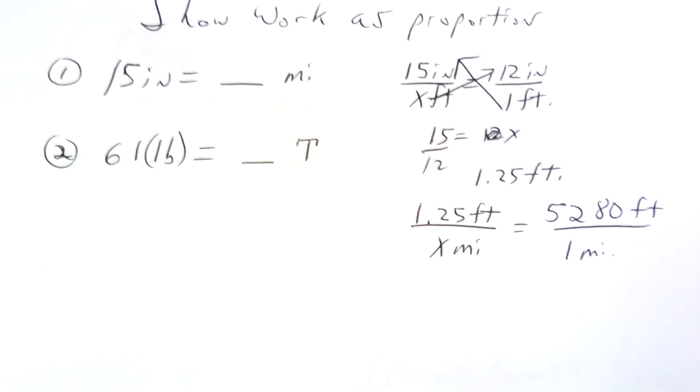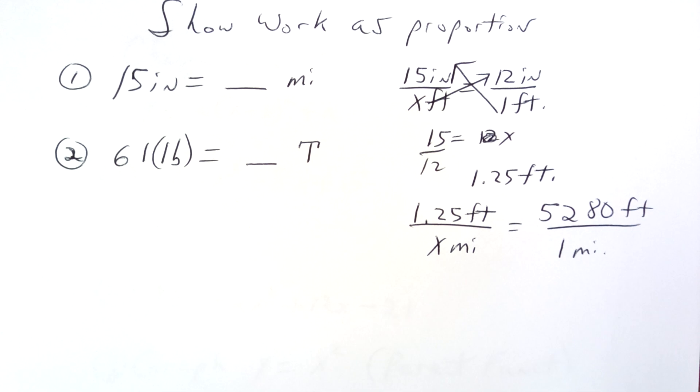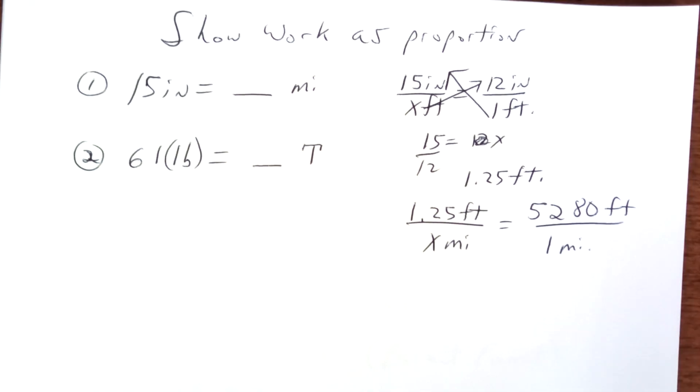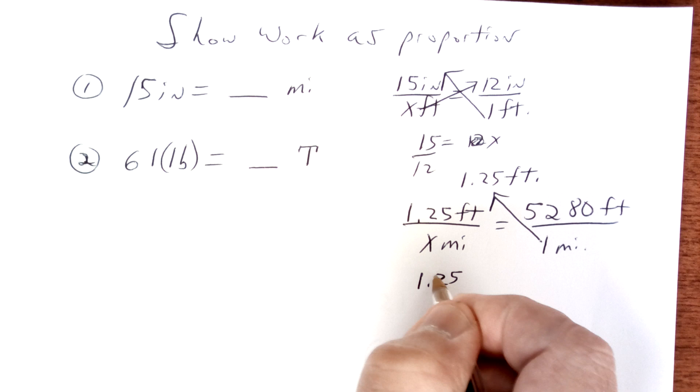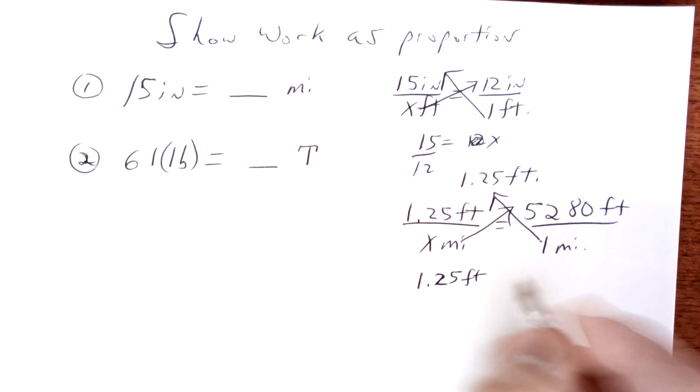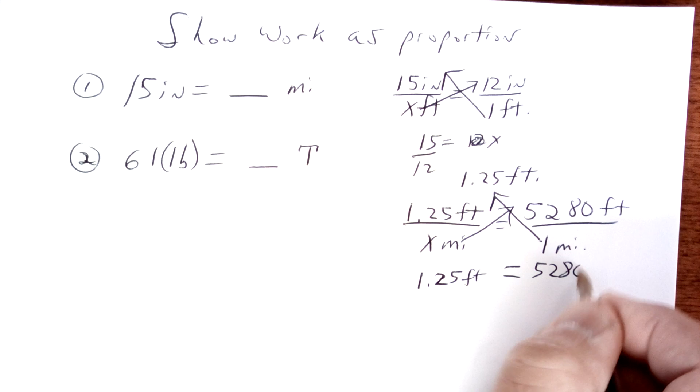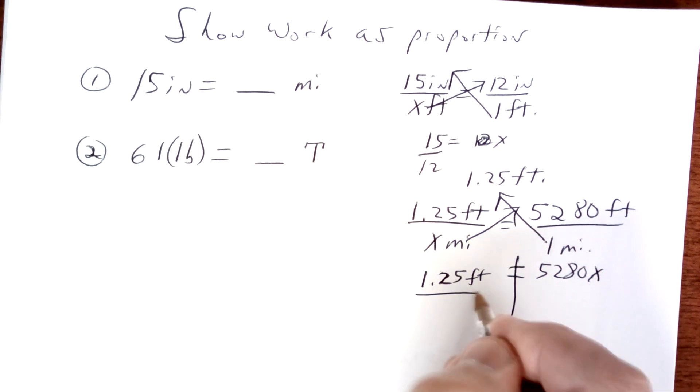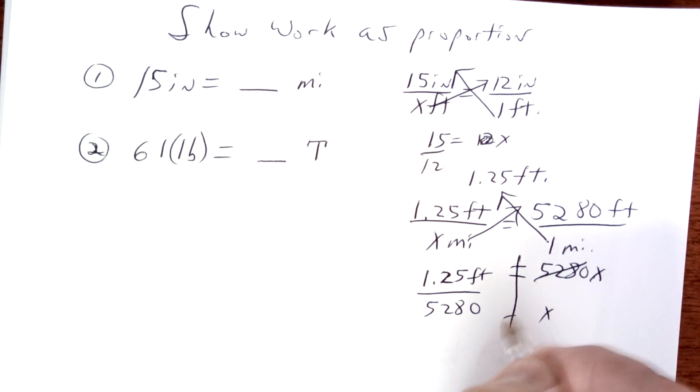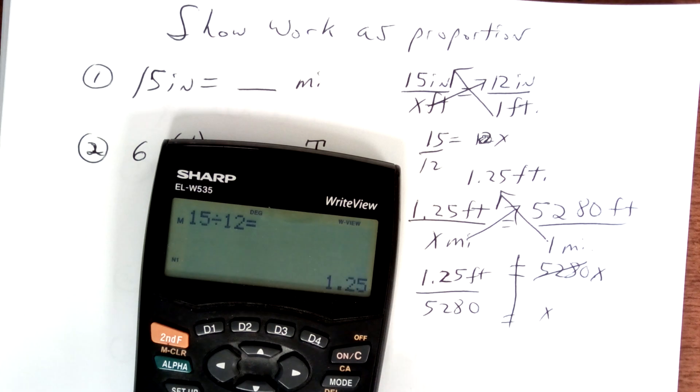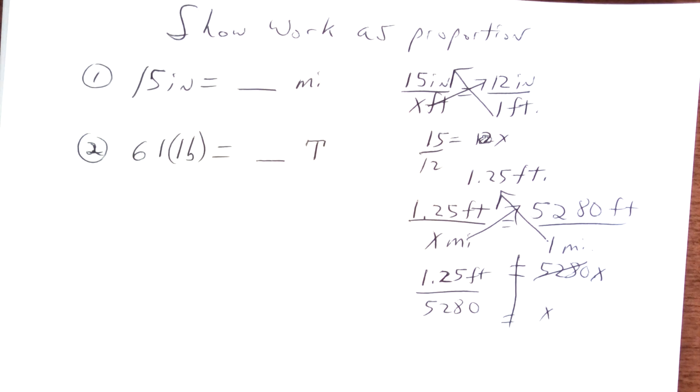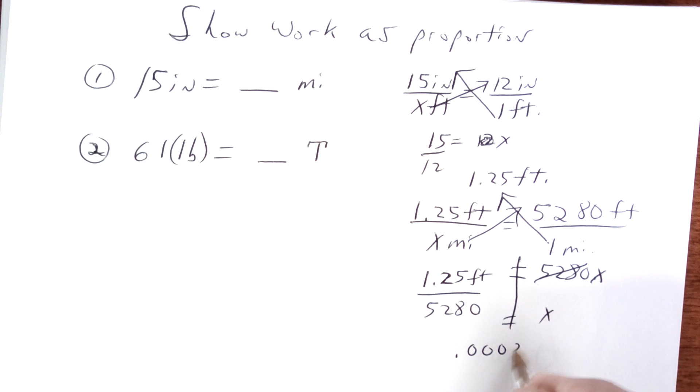So on this one right here, I get 1 times 1.25 equals 5280 times x. And then I divide by 5280 and whatever you get is your answer. So 1.25 divided by 5280 equals 0.0003023 miles.